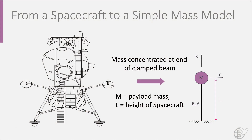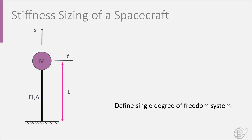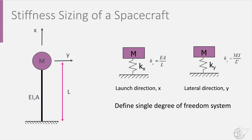Many satellites can simply be modelled as a concentrated mass at the end of a clamped beam. M is the mass of the payload of your spacecraft and L the height of the spacecraft. The beam in practice is often a thin-walled cylinder whose mass is much less than the payload on top, which is why the mass of the cylinder, or bus as it is known, is neglected. The beam will have a stiffness EI and a cross-section A, and we can define a simple single degree of freedom system involving a mass m and a spring.